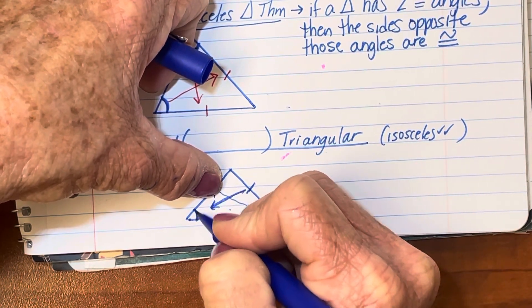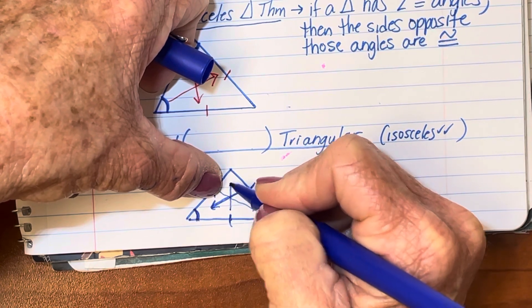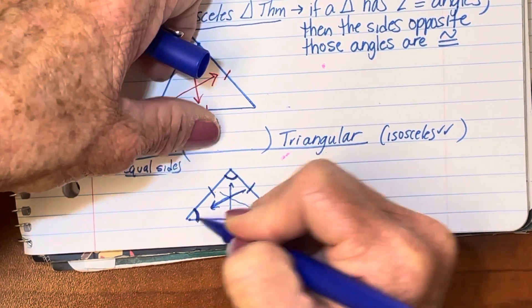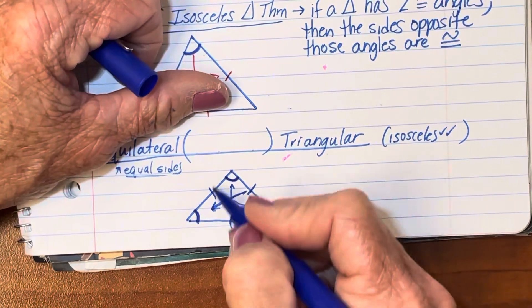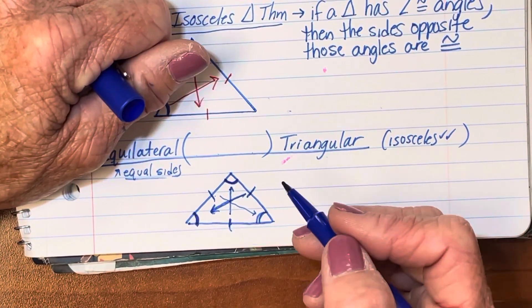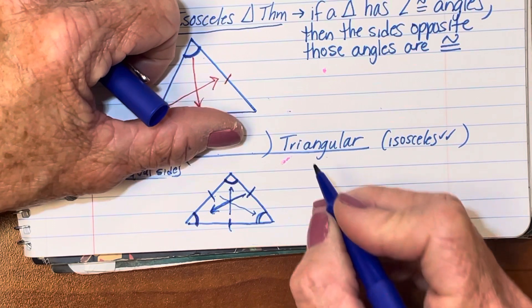And if I go across from these two sides, across from this side, I've already marked the angle congruent, across from that one, it would also have to be congruent. So in an equilateral triangle, all of the angles have to be congruent because of the isosceles triangle theorem.